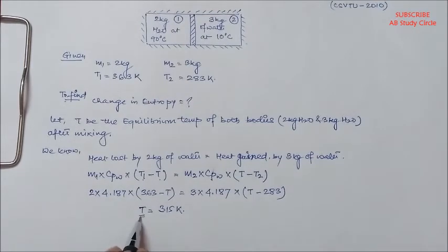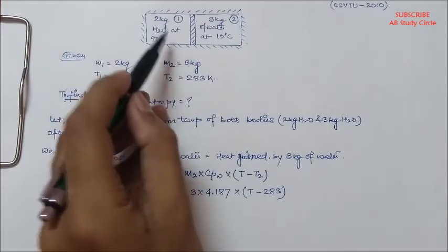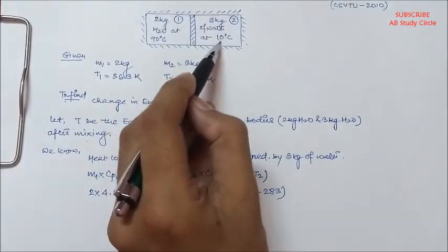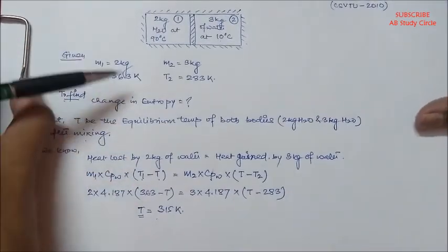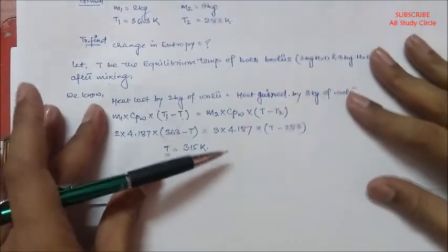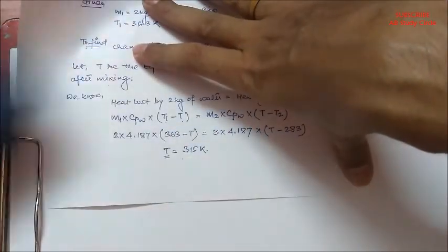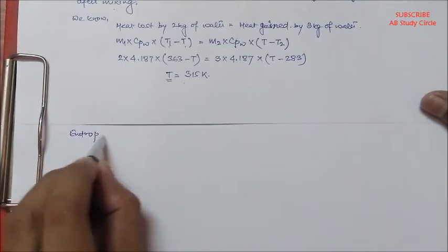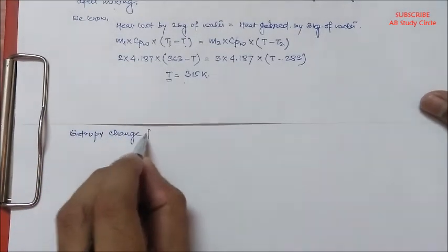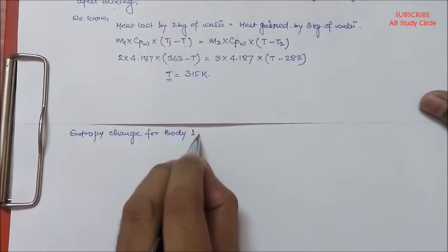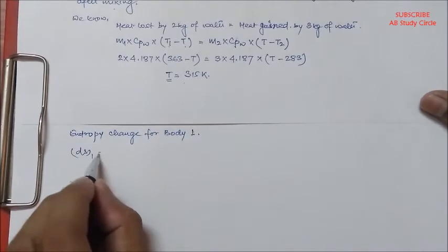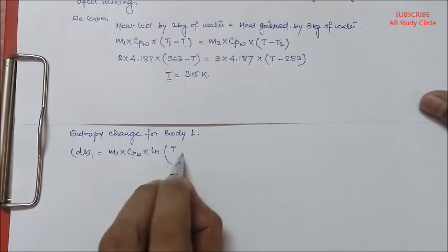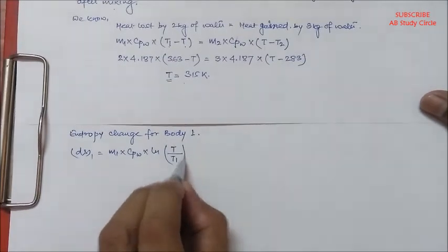After mixing, the final temperature of both bodies will be T. Now let's find out the entropy change for each body. So we have entropy change for body 1: ΔS1 = M1 × CPW × ln(T/T1). Let's put the values: that is 2 × 4.187 × ln(315/363).